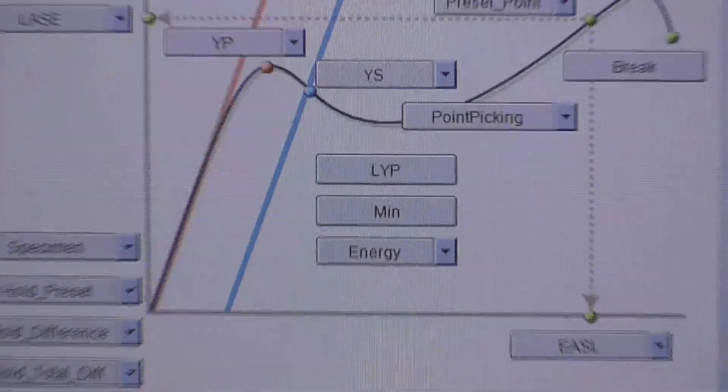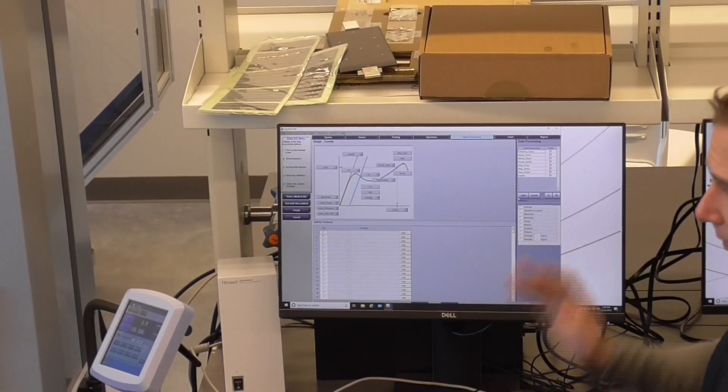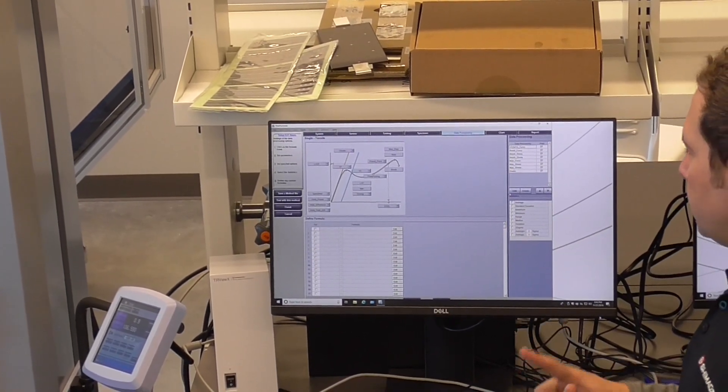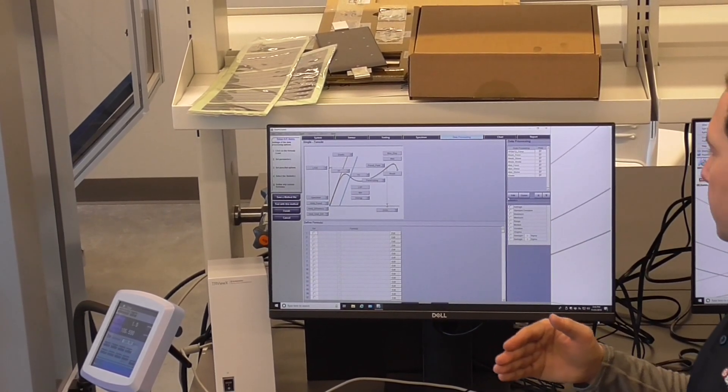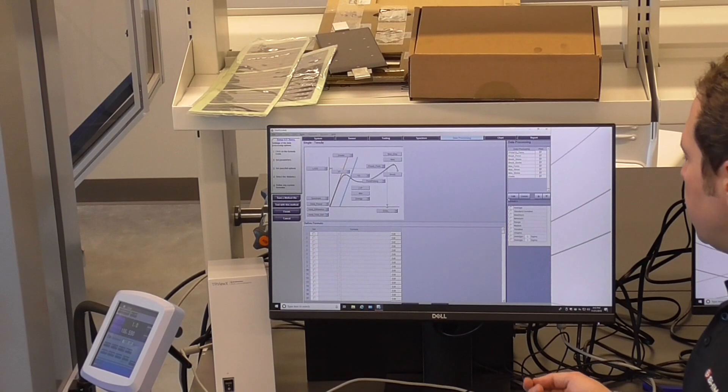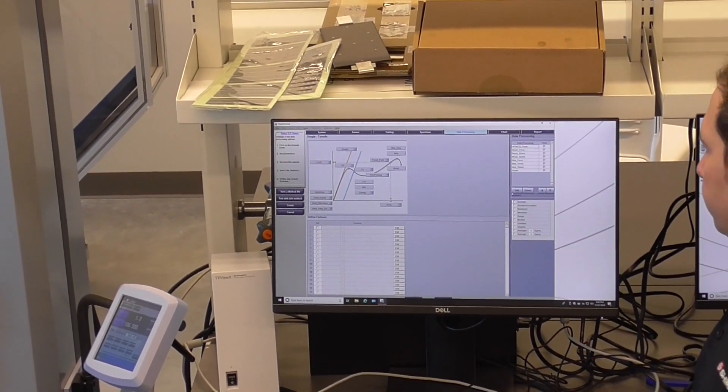In addition to your data processing parameters for this screen, you can select your statistical analysis for each of those data processing parameters. So this includes your average, standard deviation, maximum and minimum within that test batch. You can also get to some more eccentric things like your six sigma values as well.